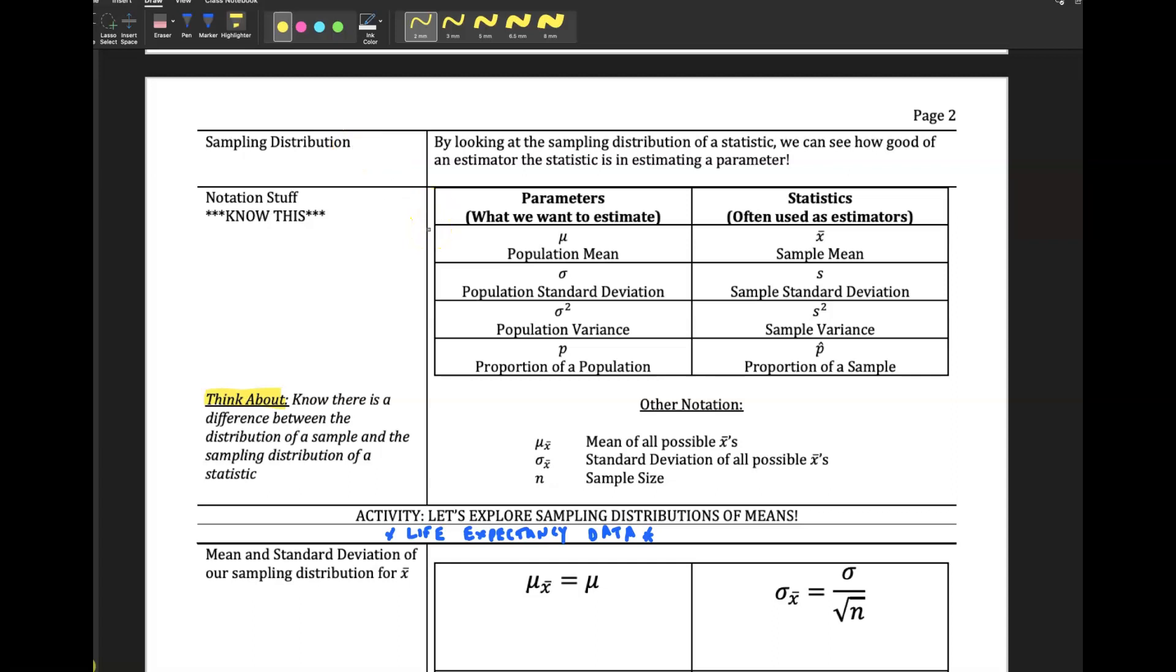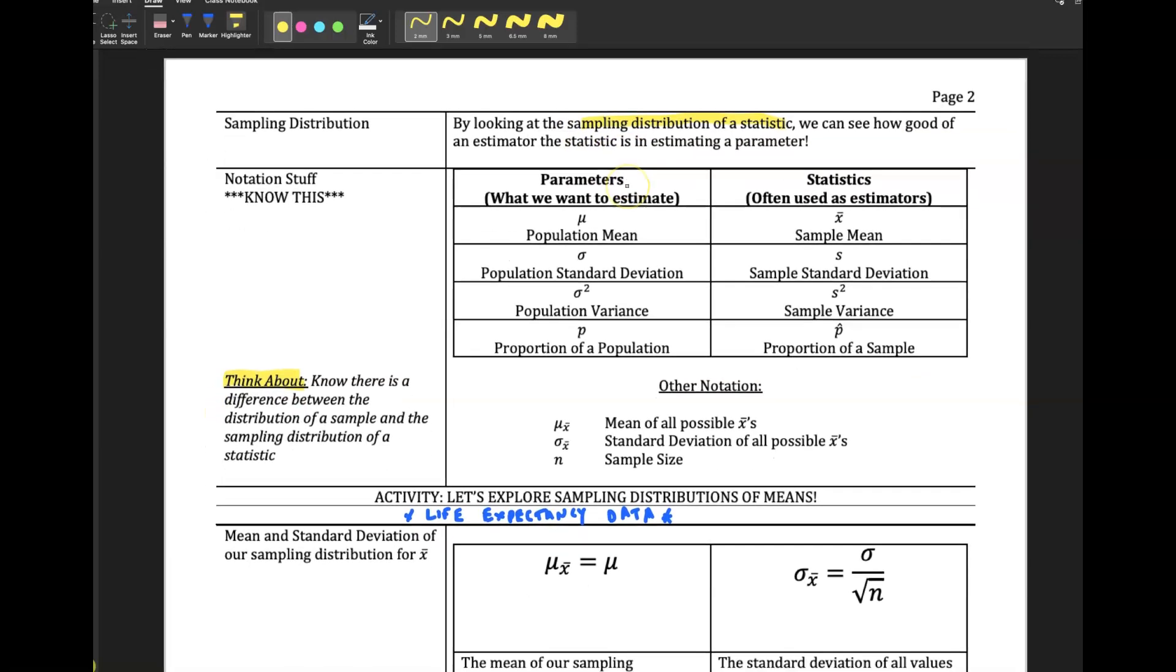So we're now going to go ahead and take a look at a sampling distribution. And why we care about a sampling distribution is that when we look at the distribution of a statistic, the sampling distribution of a statistic, we can see how good of an estimator the statistic is in estimating the parameter.